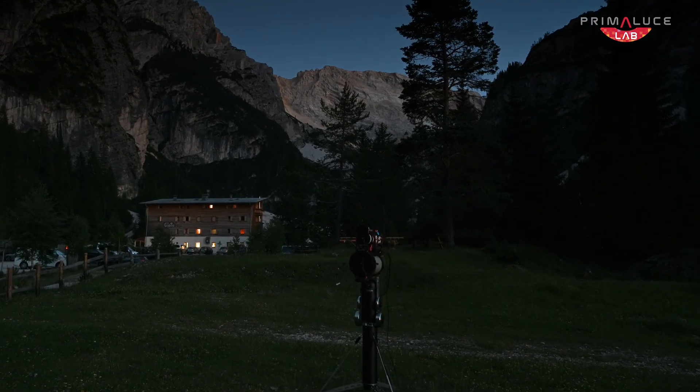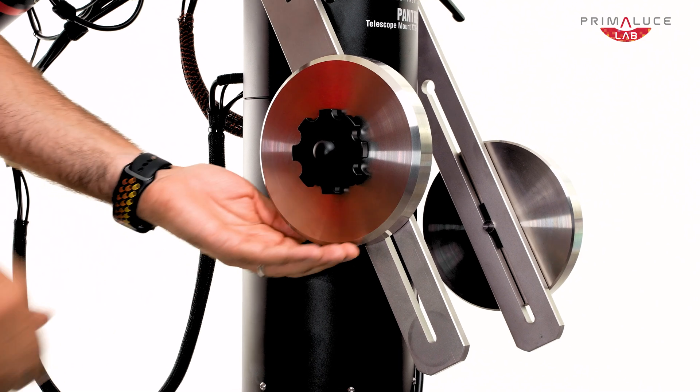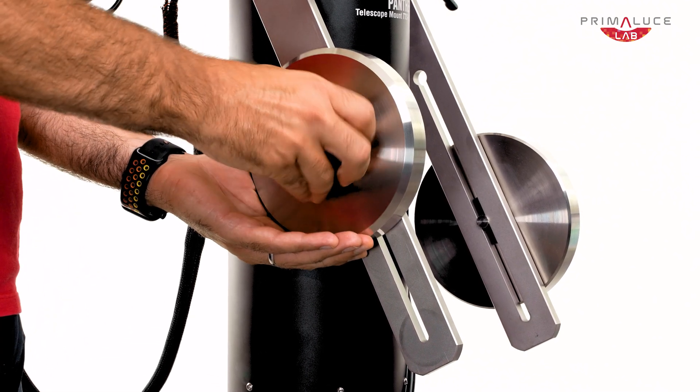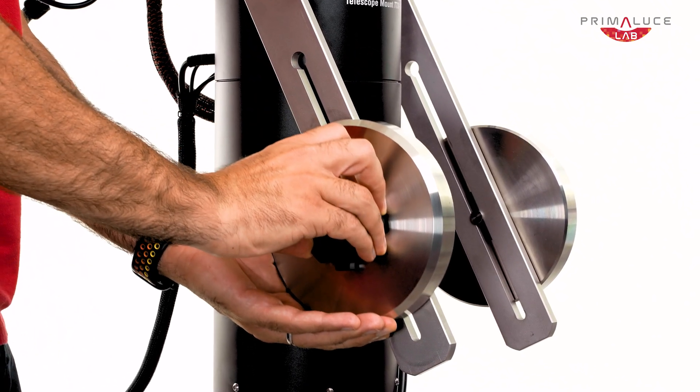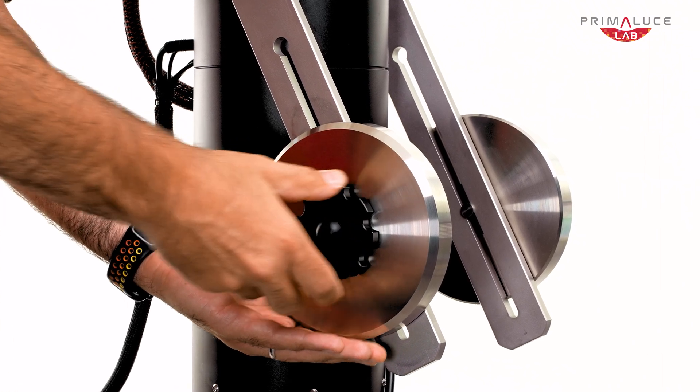Just start with the telescope pointing north and to the horizon. Also, weight balance is faster. You just have to worry about one axis, the elevation one, since the Azimuth needs no balancing at all.